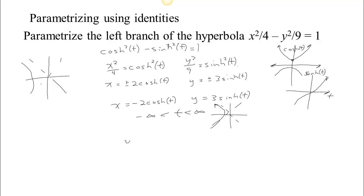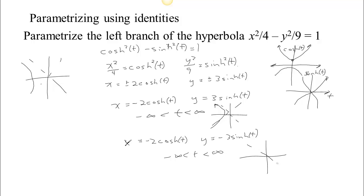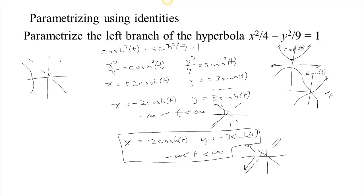For the alternate direction, choose x equals negative 2 cosh t and y equals negative 3 sinh t. The negative on sinh flips that graph so y values are decreasing. For the same bounds on t from −∞ to ∞, we trace the hyperbola going downward — with y decreasing as x comes in and goes back out — which is just the opposite direction along the left branch.